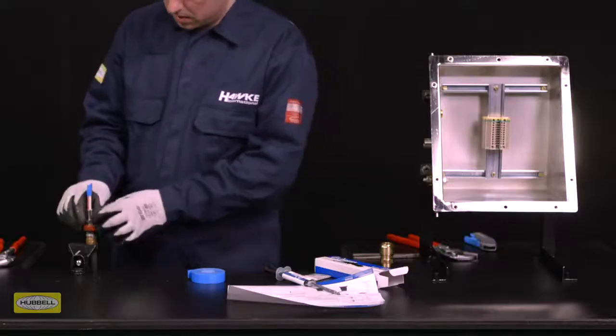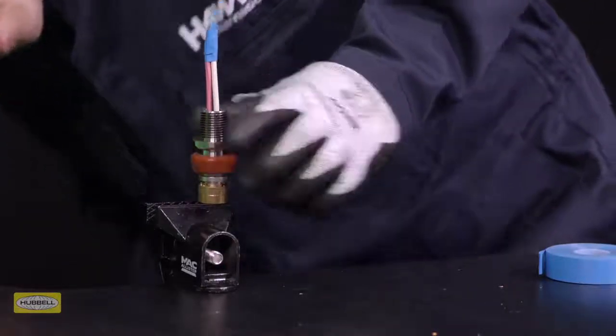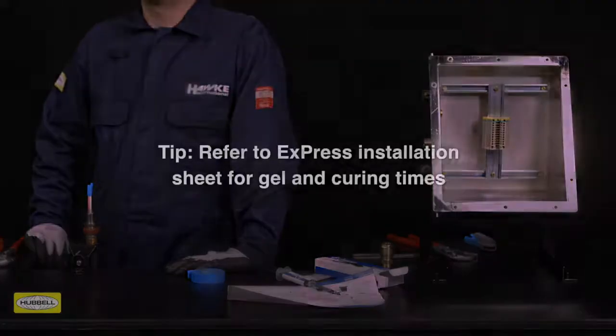Place the entry over the silicon pot to ensure it is held in the correct position. Gland installation can now continue as per the gland assembly instructions.